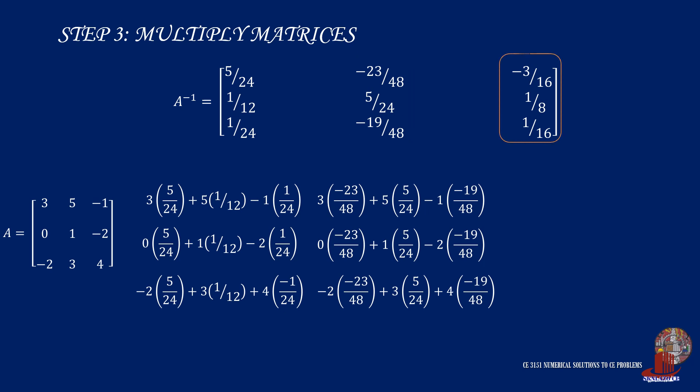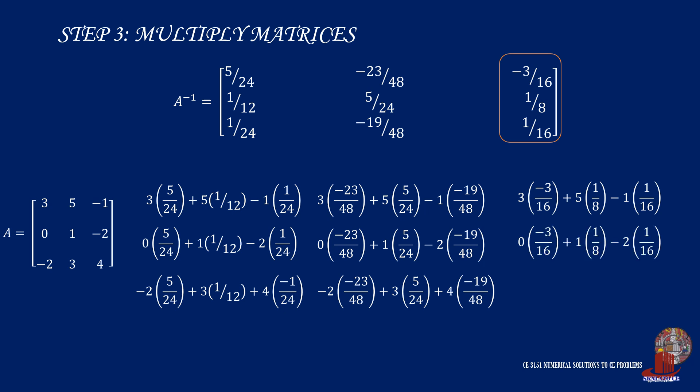For the third column, the first row is 3 times negative 3/16, plus 5 times 1/8, minus 1 times 1/16, and that is 0. The second row has 0 times negative 3/16, plus 1 times 1/8, minus 2 times 1/16, which is simplified as 0. Then the last row has negative 2 times negative 3/16, plus 3 times 1/8, plus 4 times 1/16, which results to 1. Now it's proven that matrix A times its inverse results to an identity matrix.